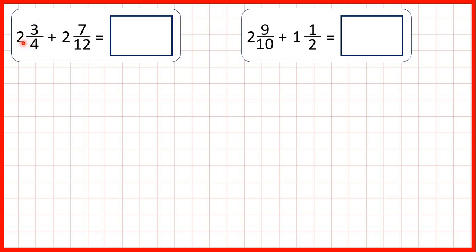So to change 2 and 3 quarters to an improper fraction, we do 2 times 4 which is 8, then we add 3 which gives us 11. So that's our numerator and the denominator stays the same.